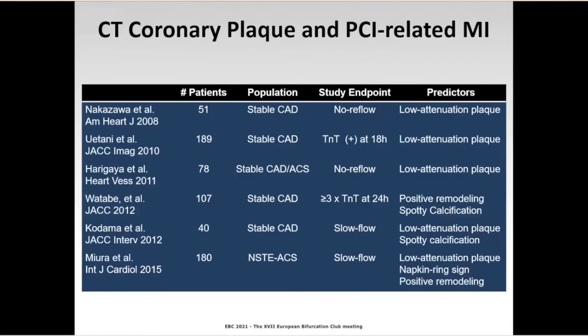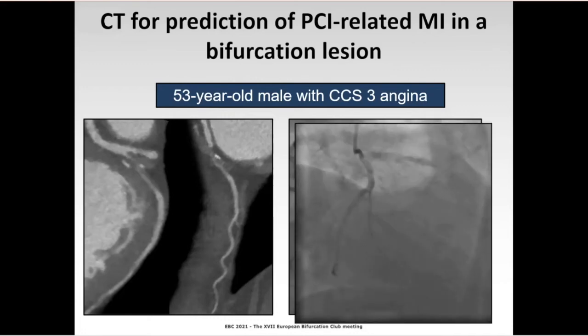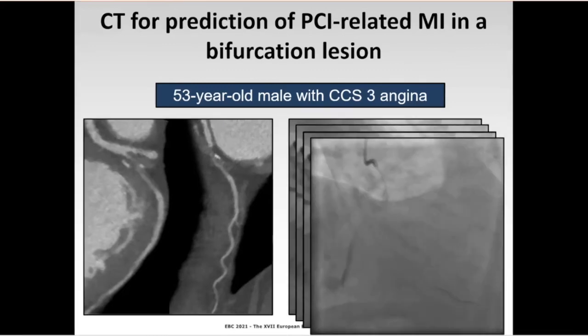There is also a large number of studies suggesting a direct relationship between low-attenuation plaque, positive remodeling, and spotty calcification, and periprocedural MI defined by troponin rise or no-reflow phenomenon during PCI. Here you can appreciate this concerning low-attenuation plaque with positive remodeling and spotty calcium that was referred for PCI. However, after stent implantation, the no-reflow phenomenon was observed and a subsequent troponin rise was reported.